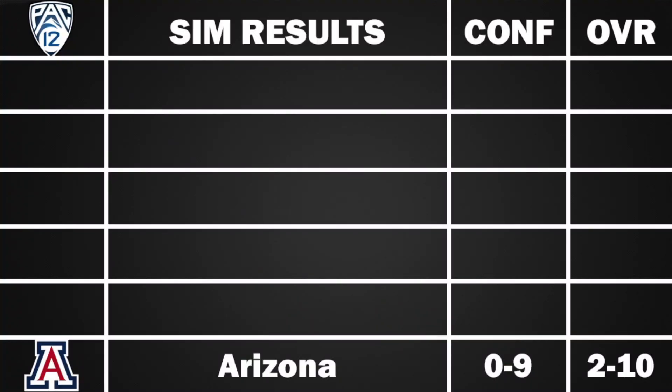Starting at the bottom: Arizona is a big disappointment at 2-10. This is a team I picked to go to a bowl game, so the game is not high on the Wildcats. Their only wins would come over Northern Arizona and UTEP — and we didn't even simulate those games, just counting those as wins. A very disappointing season for Arizona.